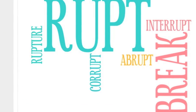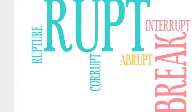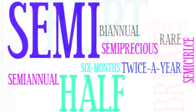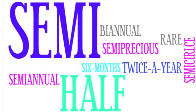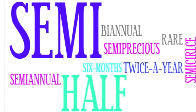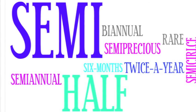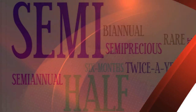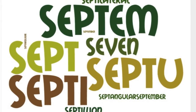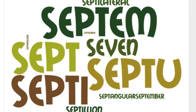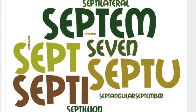Rupt means to break, such as interrupt, abrupt, corrupt, and rupture. And semi means half, such as semi-annual, bi-annual, semi-precious, and semi-circle. And sept means seven, such as September, septangular, or septilateral.